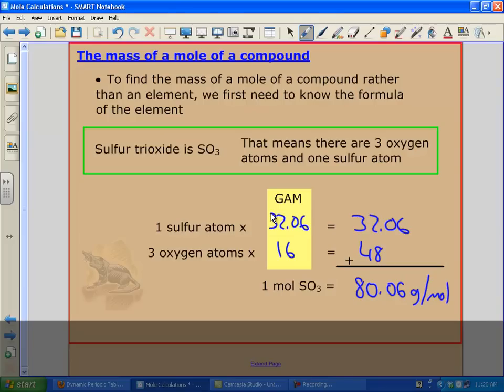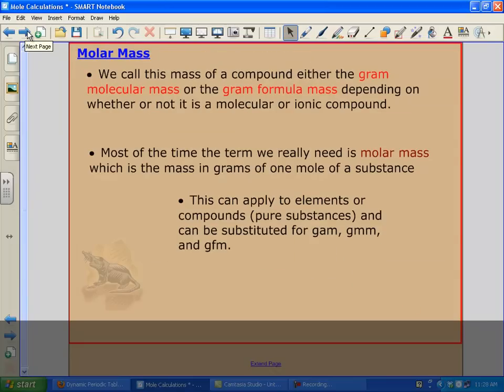You see the way I wrote it, that's grams per mole, how you would write it if you didn't put it in an equality. If we want it in an equality, we just write it like this: one mole of SO3 equals 80.06 grams, and we would use that as our conversion factor. Definition wise, this is what we call the gram molecular mass or the gram formula mass, depending on whether it's ionic or molecular. Most of the time though, we're going to call it the molar mass of the whole thing.